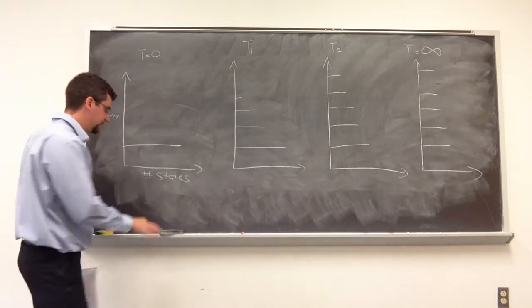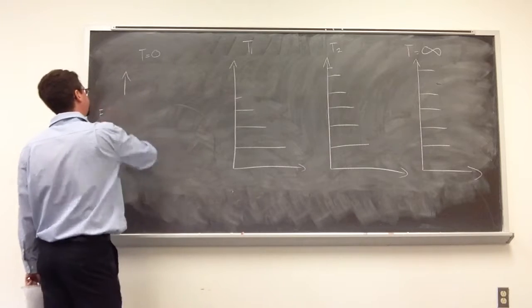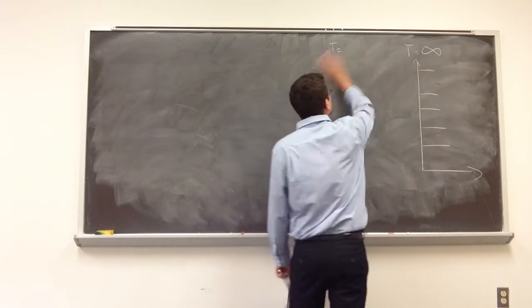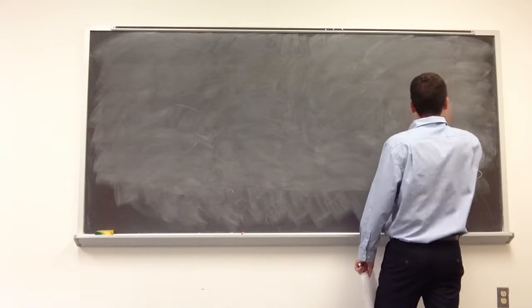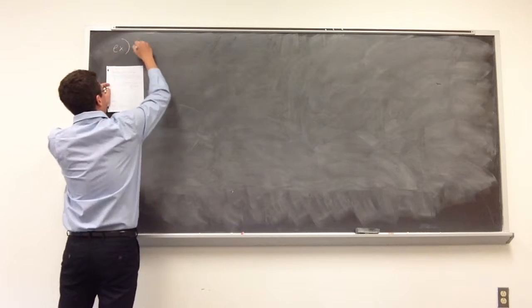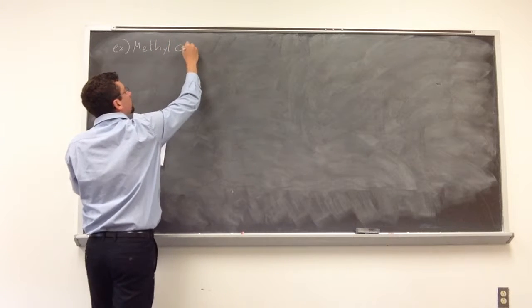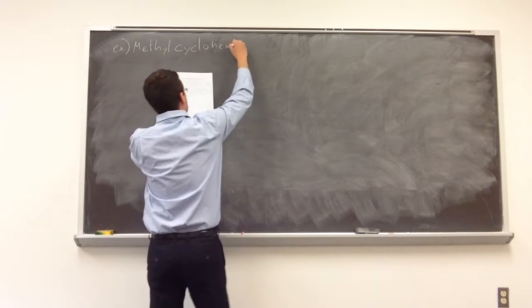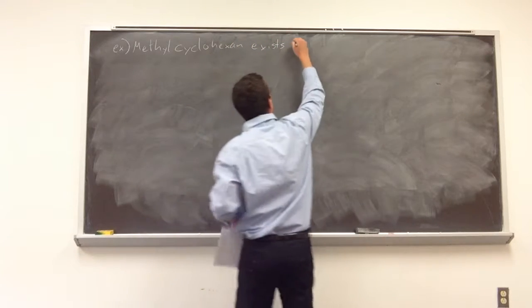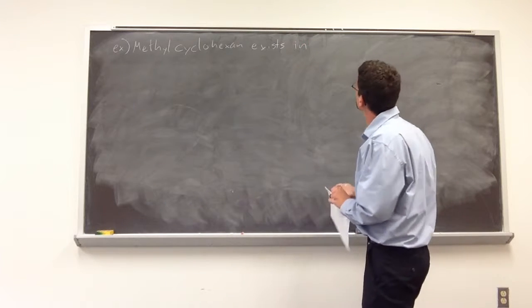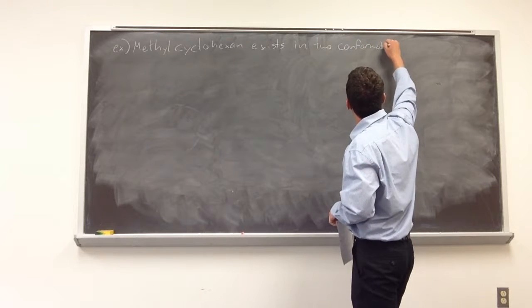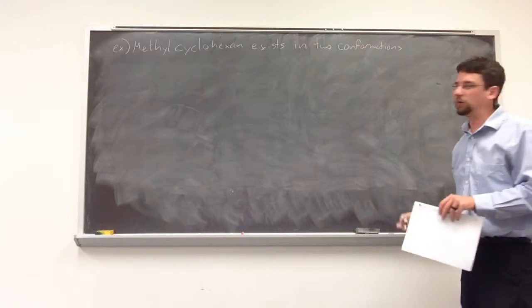But how do we use this information to get something important, something chemical? Well, let's look at two conformers. So we're going to consider methylcyclohexane. Methylcyclohexane exists in one or two conformations, in a possible of two conformations.